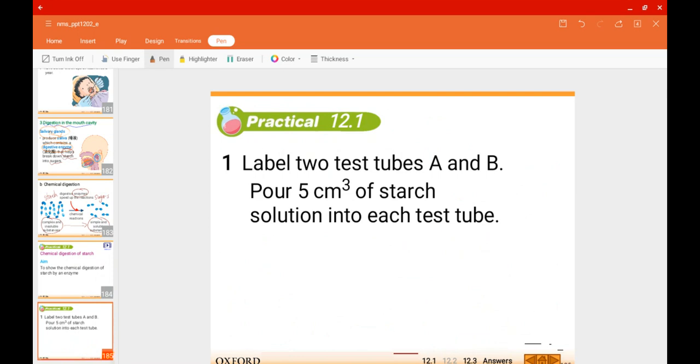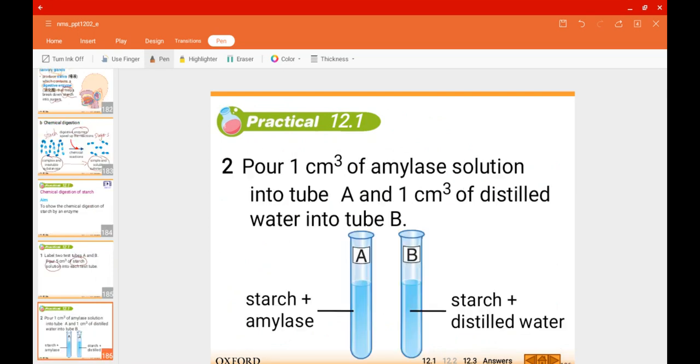Very simple. Get two test tubes, label them test tubes A and B, and pour roughly 5 ml of starch solution. Then get 1 cm³ of amylase solution. Amylase is one of the names of an enzyme. In test tube A we have the enzyme.